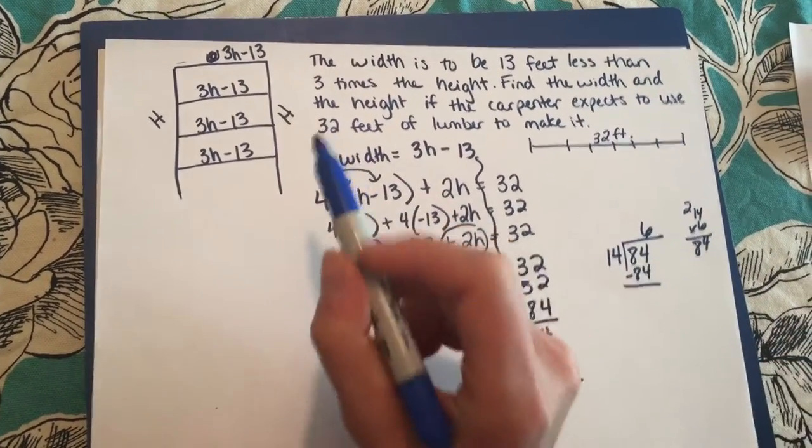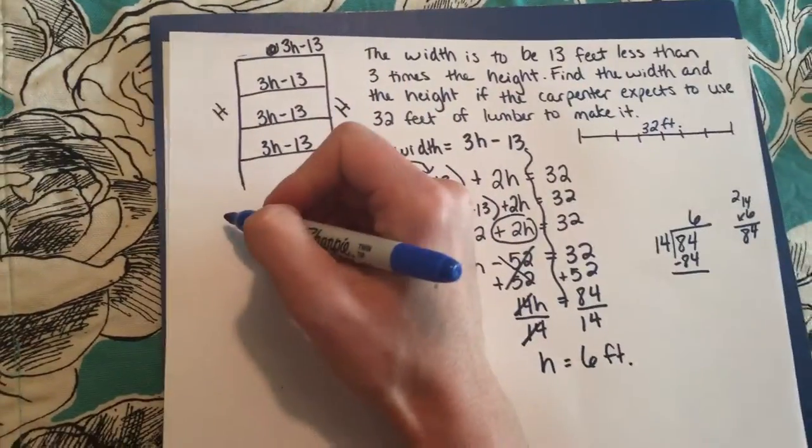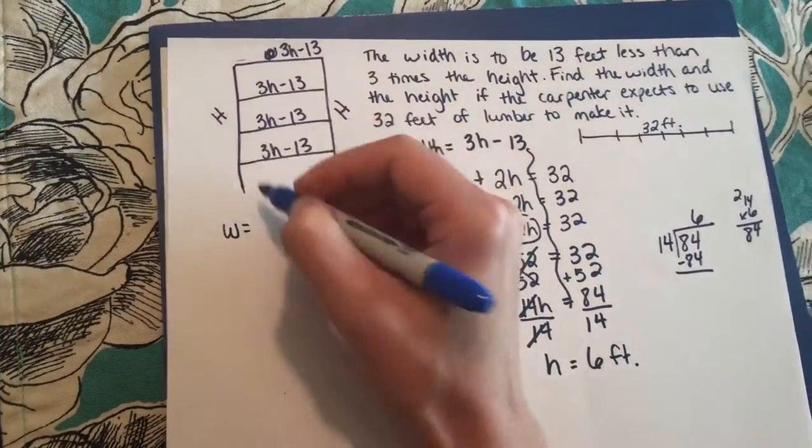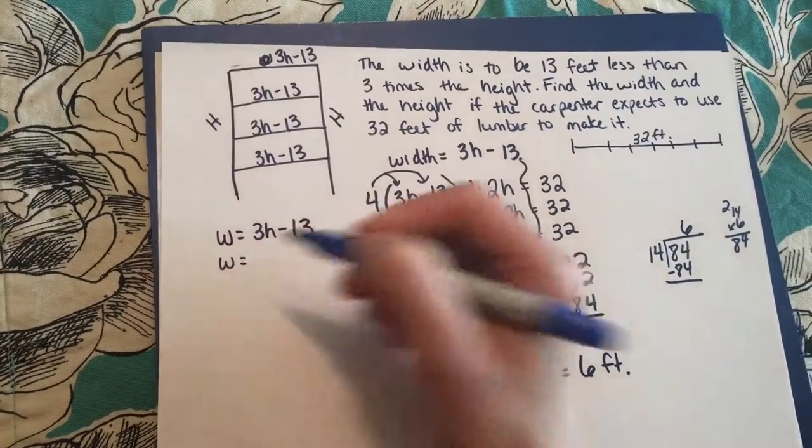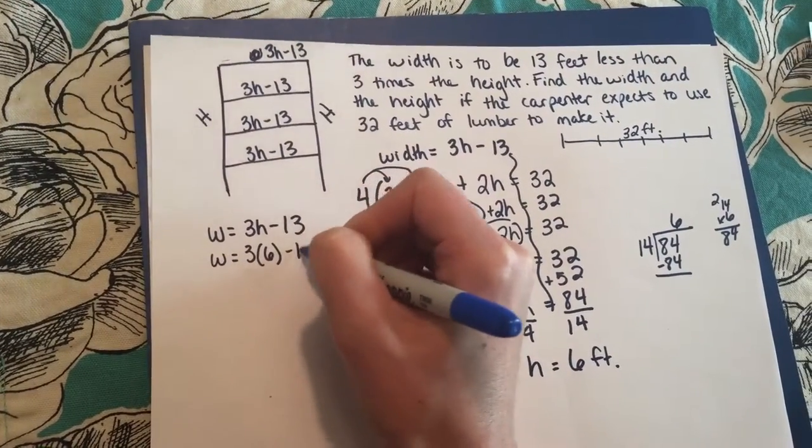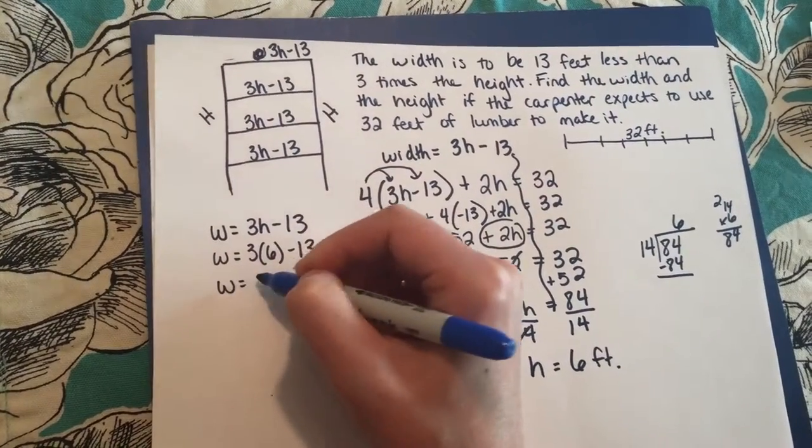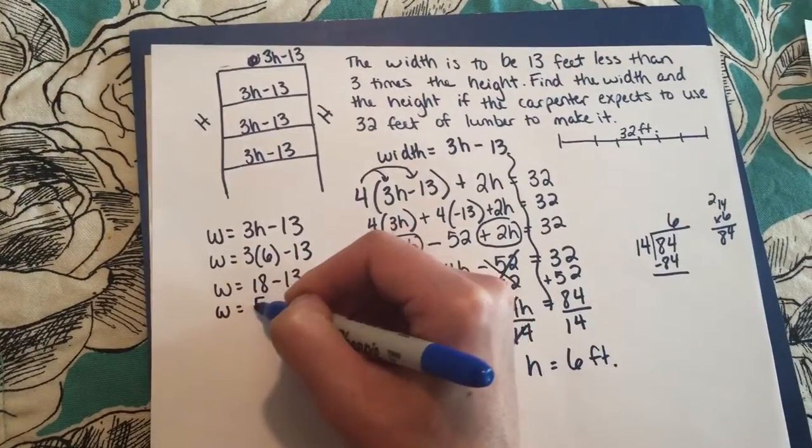Then my next question is, I'm not done because remember it asked me for the width as well, so I'm going to go back up here to find my w. w equals 3h minus 13. I'm going to plug in my h now that I know it, which is 6 feet. So 3 times 6 minus 13, I get w equals 18 minus 13 and the width is 5 feet.